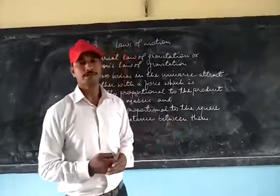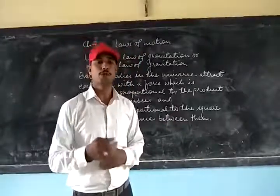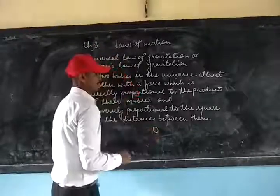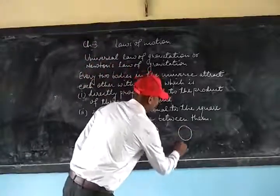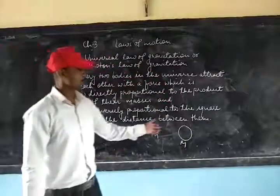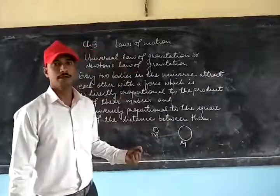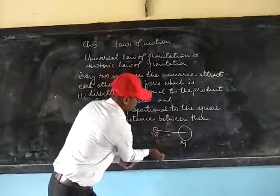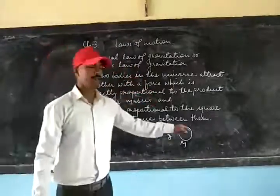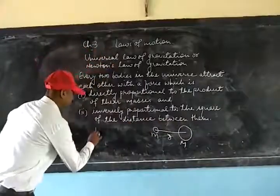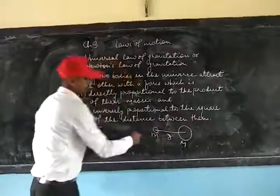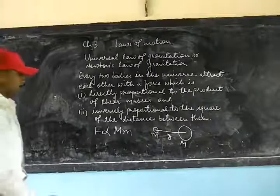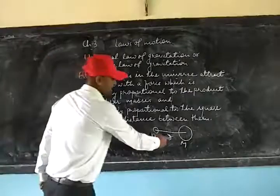Every two bodies in the universe will have a force of attraction. This force of attraction between the two bodies will be directly proportional to the product of the masses of the two bodies. If we take the two bodies as small m and capital M, and suppose these two bodies are placed at a distance R from each other, then the force of attraction will be directly proportional to the product of the two masses and inversely proportional to the square of the distance between the two bodies.